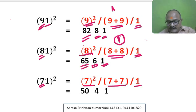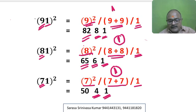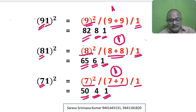71 square: 10th digit is 7. 7 square, 7 plus 7, last we write 1. So 1; 7 plus 7 is 14, I write 1 here, 4; 1 is carry forward. 7 square is 49; 49 plus carry forward 1 is 50. So 71 square is 5041.